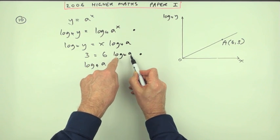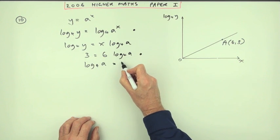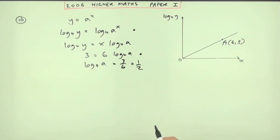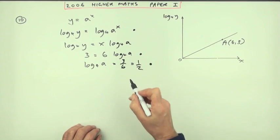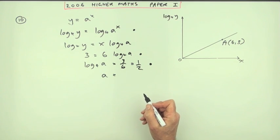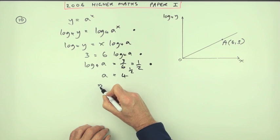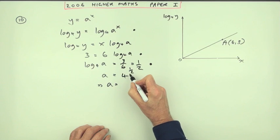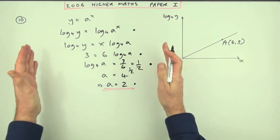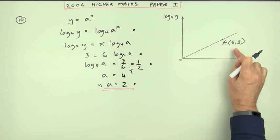Now taking that across and dividing - you're just starting to solve it for a. To get to a, there's two things you need to do: get rid of that 6 and get rid of that operation log base 4. First get rid of the 6 by dividing - 3 over 6 is just a half. That gives you a mark. Then finally to get a itself, get rid of the log base 4. Do the opposite, which is 4 to the power a half. From that you're going to get a equals - a number to the power a half is square root. Square root of 4 is 2. That's the final mark.